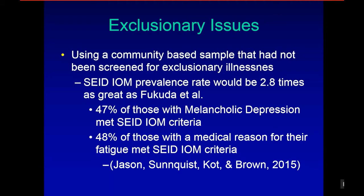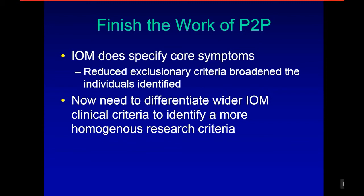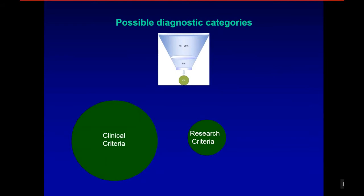We think we need to finish the work of P2P — Pathways to Prevention. The IOM does specify core symptoms, but we need to reduce the exclusionary criteria because it has broadened the individuals identified. We now need to differentiate the wider IOM clinical criteria to identify a more homogeneous research criteria. What we're suggesting is that of the 4% of individuals with six or more months of fatigue, there's a clinical criteria for a large group, but a research criteria will be narrower, more focused, and more symptomatic.